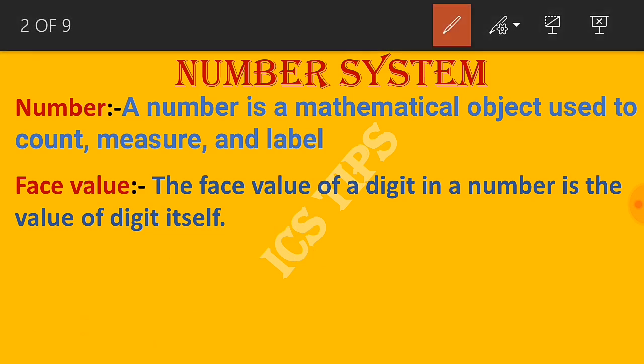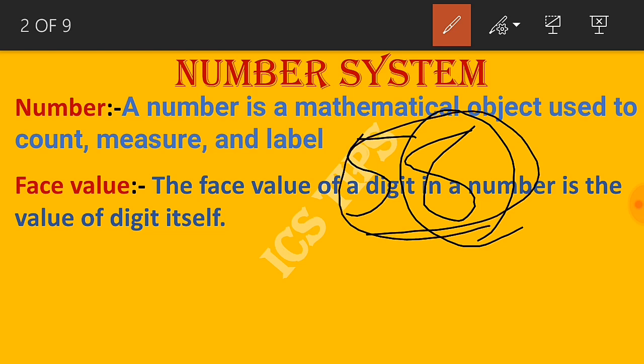For example, if we have the number 58, the face value of 8 is 8 itself, and the face value of 5 is 5 itself - the value of the digit itself.